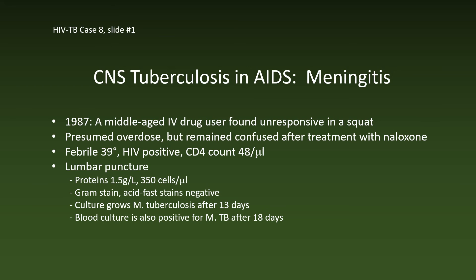CNS involvement and particularly meningitis is also more frequent in TB-HIV co-infected patients than in HIV-negatives. Case 8 was a middle-aged IV drug user found unresponsive in a squat. He had a presumed overdose but remained confused after treatment with naloxone. He was febrile at 39 degrees and immunosuppressed with only 48 CD4 cells per microliter. Lumbar puncture yielded 1.5 grams per liter of protein and 350 mononuclear cells per microliter.